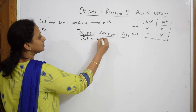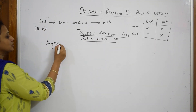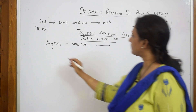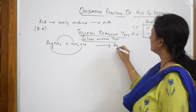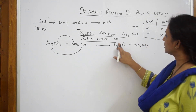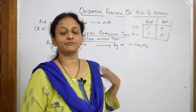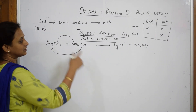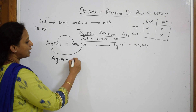For the silver mirror test, first you take silver nitrate and add ammonium hydroxide. There is an exchange of ions — a double displacement reaction. Silver hydroxide and ammonium nitrate are formed: AgNO₃ + NH₄OH → AgOH + NH₄NO₃. Then you keep adding ammonium hydroxide to the silver hydroxide precipitate until it forms a coordinate complex.